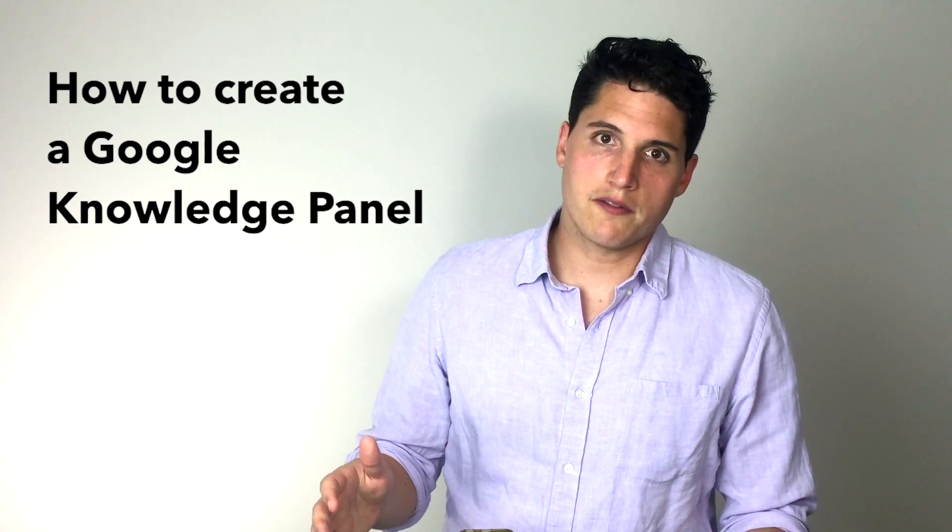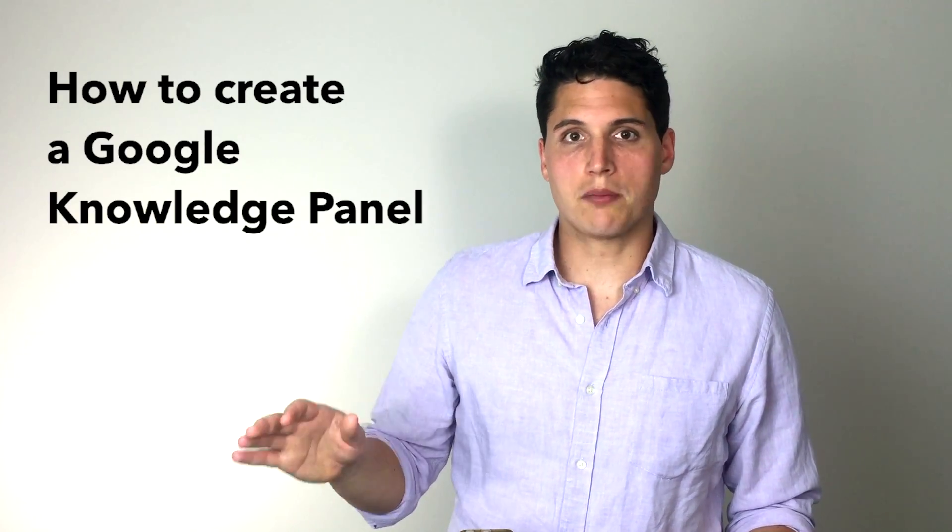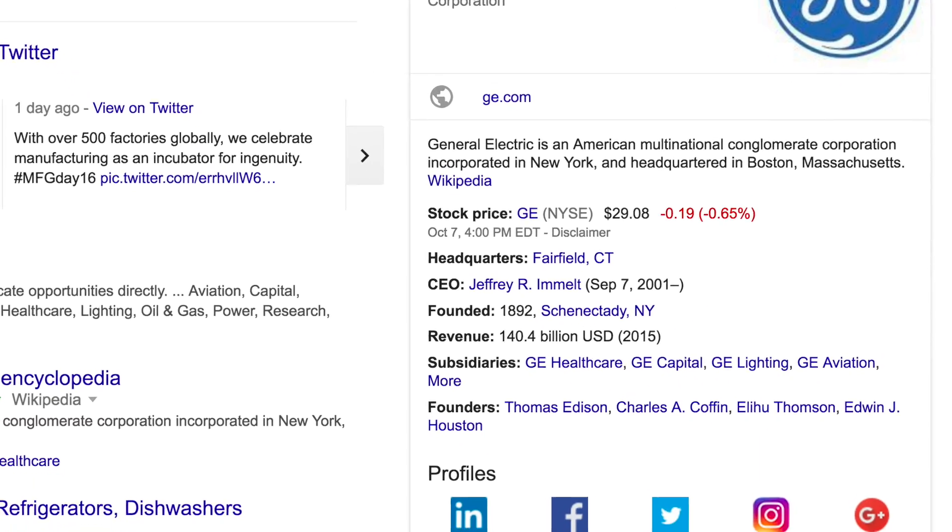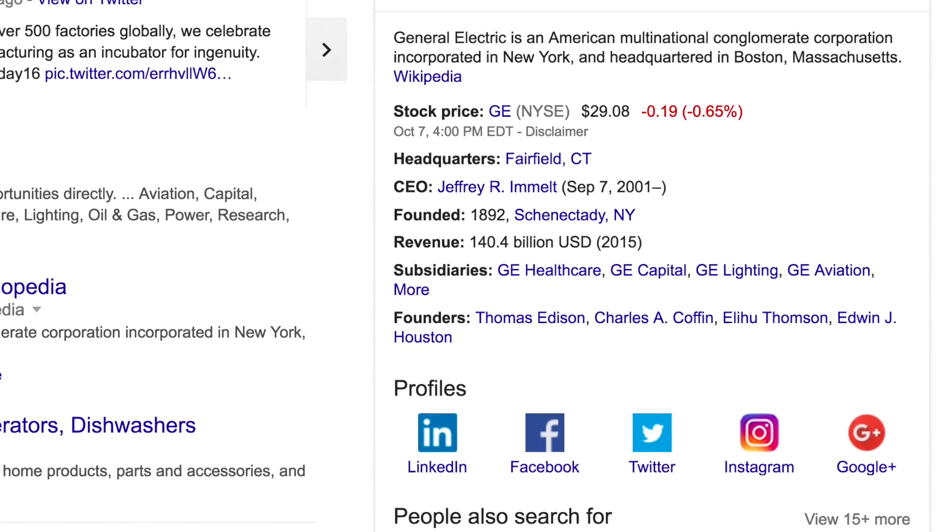Knowledge panels are boxes of information that sometimes show up in the top right-hand corner of Google search results. Often things like your business name, the year it was founded, business leadership, your logo, and pictures will show up in the knowledge panel.